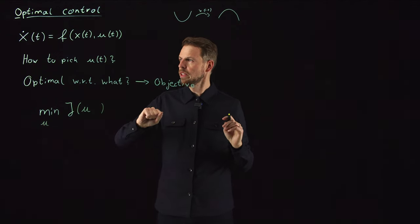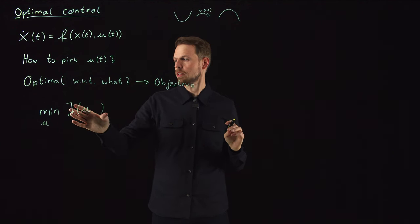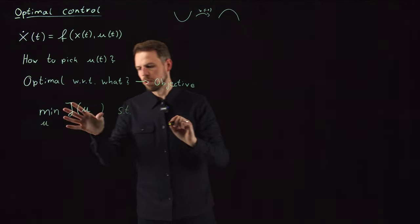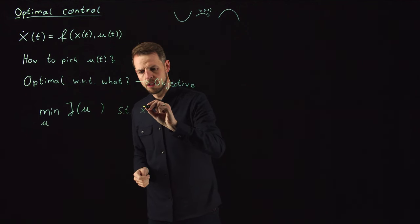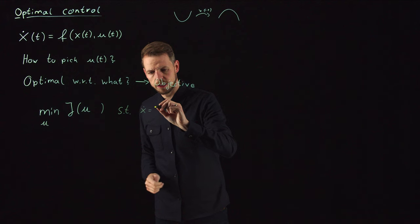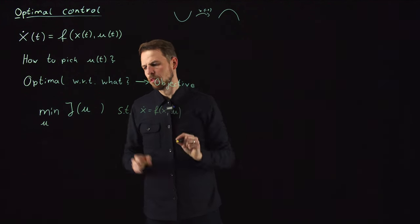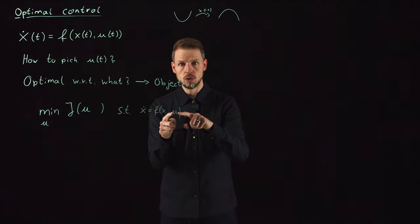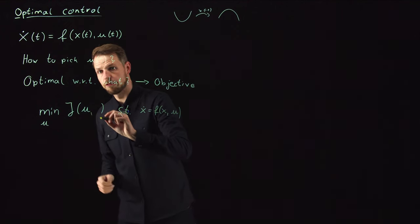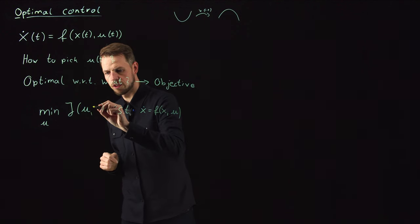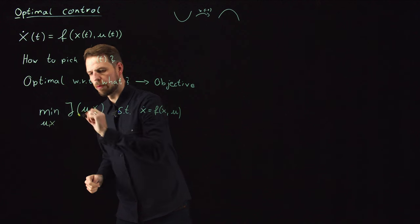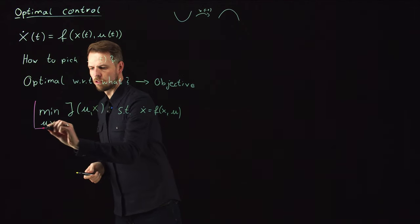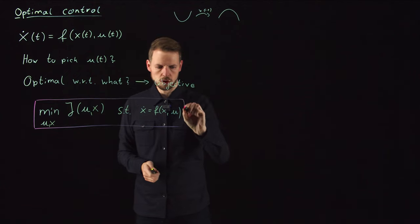But this is not complete, because we want to minimize subject to our dynamical constraints. We have a constrained problem—we want to minimize subject to the system dynamics. U has an influence on X, so the cost functional is also dependent on the system state, and we're also minimizing over the system state. This is our very general formulation of the objective we want to achieve.